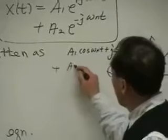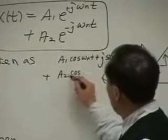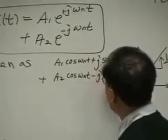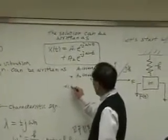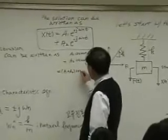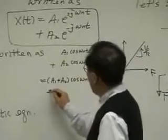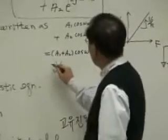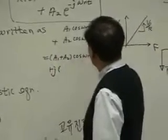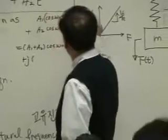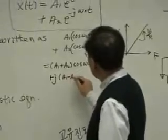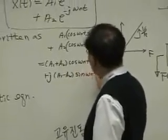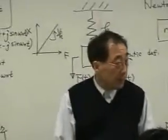So I can write this A1 plus A2 cosine omega m t, right? So I can write this A1 plus A2 cosine omega m t plus or minus A, A or minus A to sine.